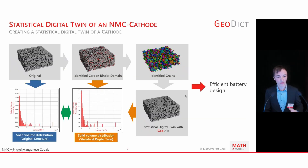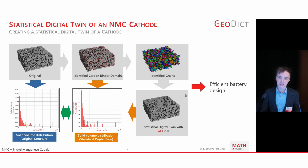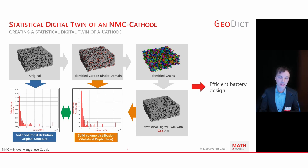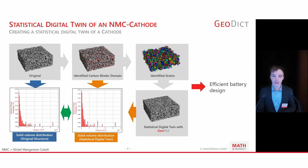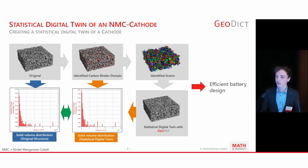The first workflow I would like to introduce is digital twinning. The target is to mimic real-world structures by structure generation. You would have a structure imaged by FIB-SEM, for example, and you want to directly identify the carbon binder domain and then be able to recreate the structure yourself. You can do that by statistical digital twinning implemented in GeoDict's GrainGeo module. For validation, you can examine the solid volume distribution as well as grain shapes and sizes to compare how well your digital twin matches the real-world sample.